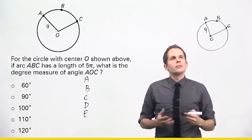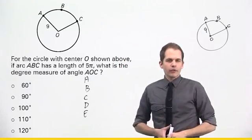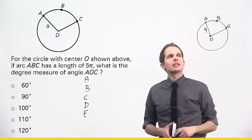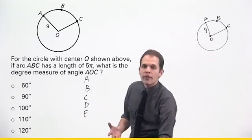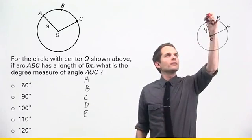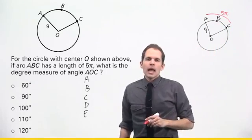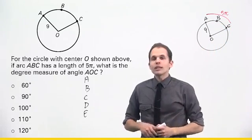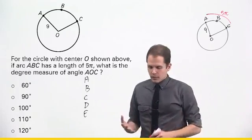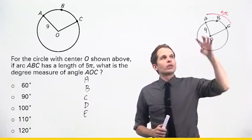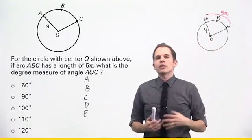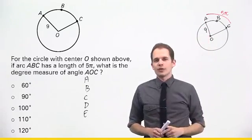And the second step of this method is to write down any information you know. So they tell me that it's 9. I also know that the arc length of ABC is 5π. Okay, and the final step of this is to write down any formulas that you need. Now we just said the formula here is relating the arc length to what they're asking me for, which is this central angle.